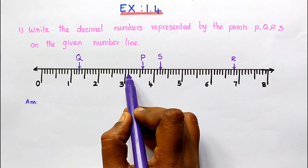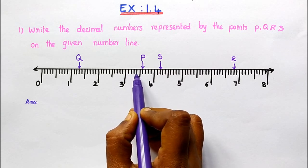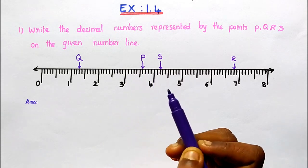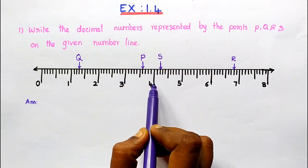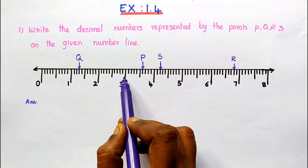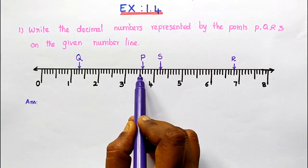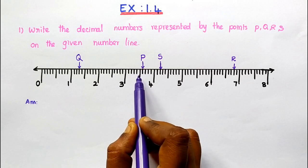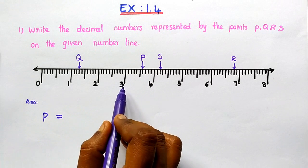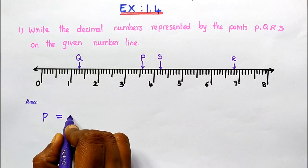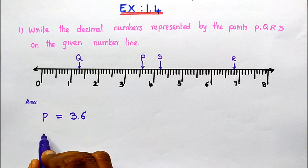Counting from 3: 3.1, 3.2, 3.3, 3.4, 3.5, 3.6. The number lies between 3 and 4 — that is the whole number — and then how many decimal divisions are there, that is the decimal part. So, P equals 3.6. Next, Q.